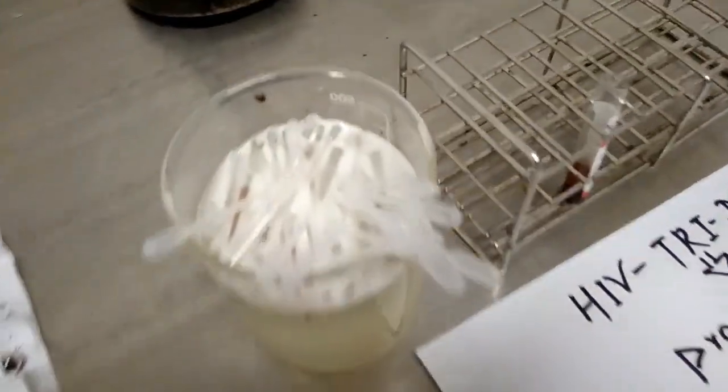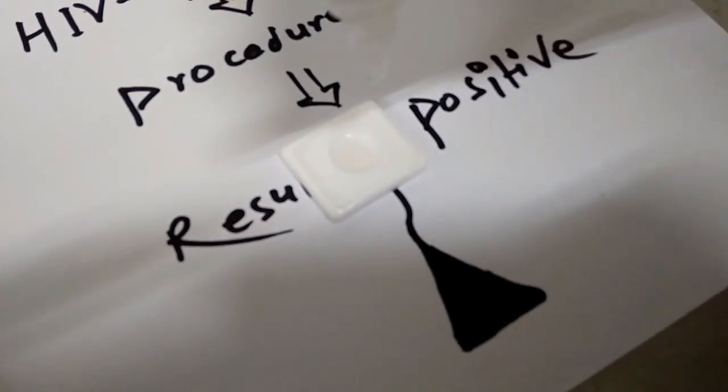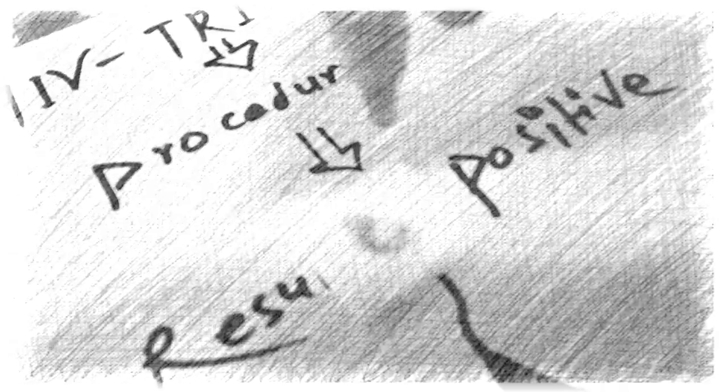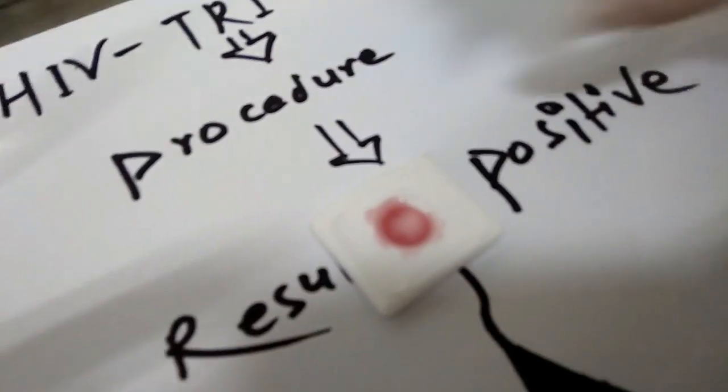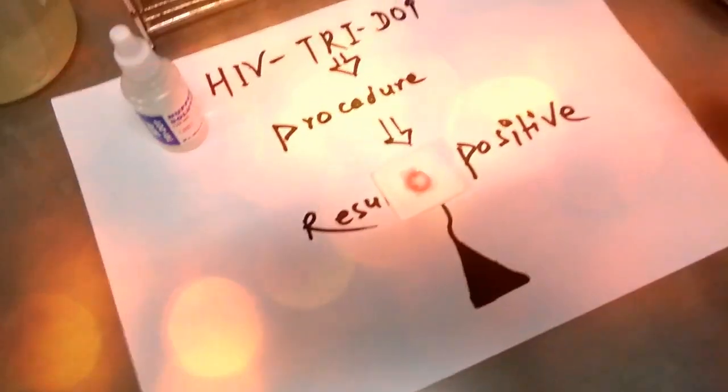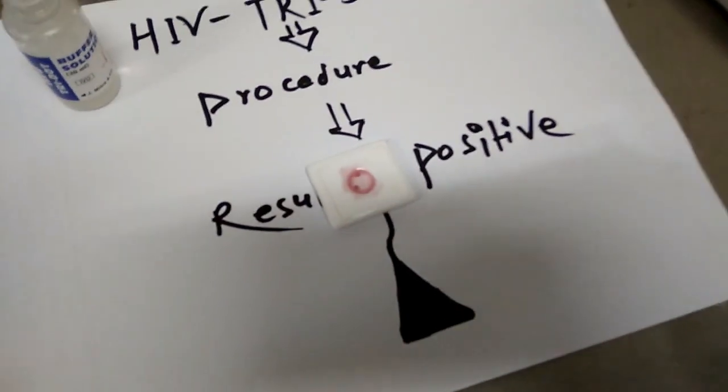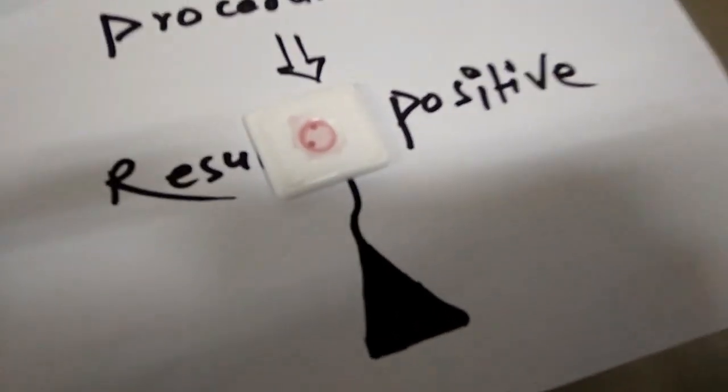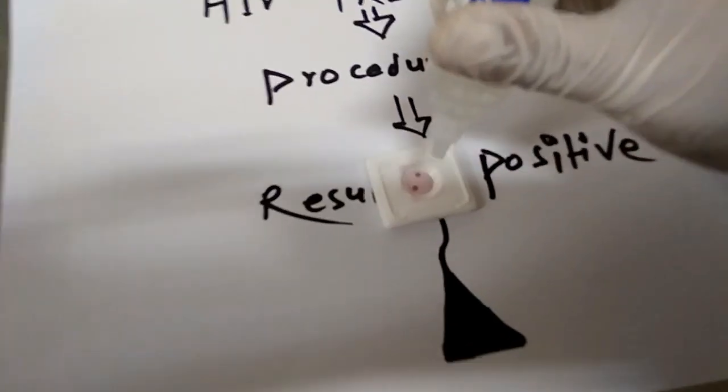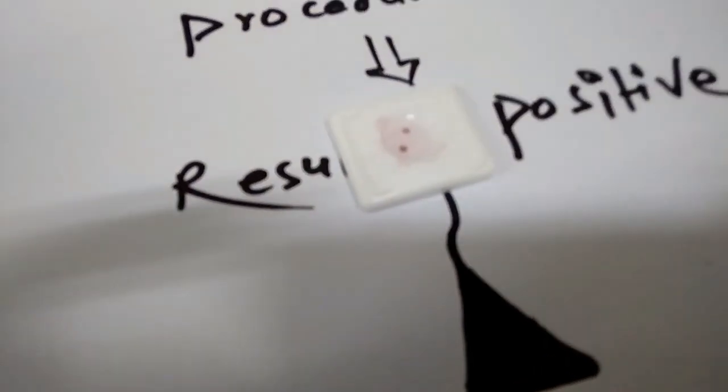After that, add five drops of buffer and wait for drying. Add two drops of conjugate and leave for drying. Finally, put five drops of buffer solution and proceed to take the reading.